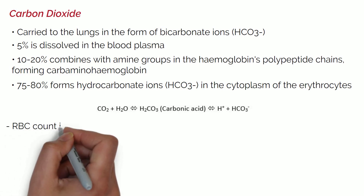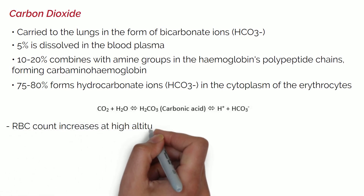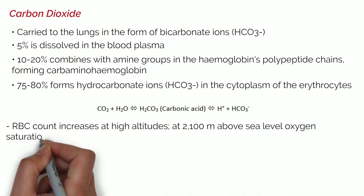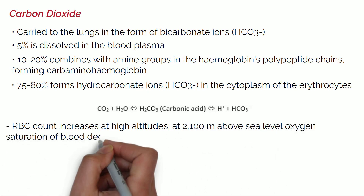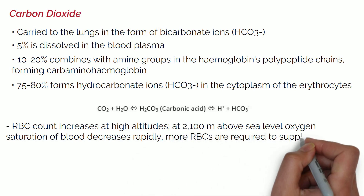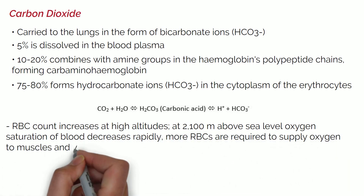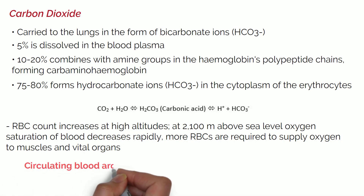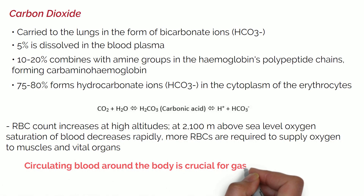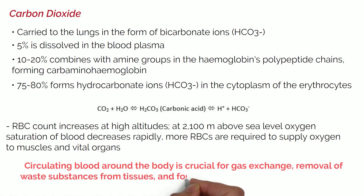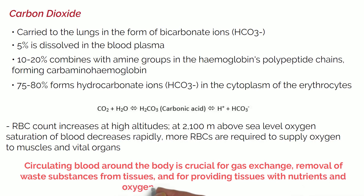Our body's red blood cell count increases at high altitudes. At approximately 2,100 metres above sea level, the oxygen level in blood decreases rapidly, so more red blood cells are required to supply oxygen to muscles and vital organs. Therefore, circulating blood around the body is crucial for gas exchange, removal of waste substances from tissues, and providing tissues with nutrients and oxygen required for survival.